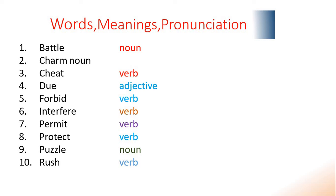Word number 7: permit. Repeat: permit. The word permit according to grammar is a verb. Number 8: protect. Repeat: protect. The word protect according to English grammar is a verb.